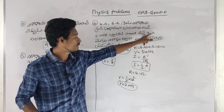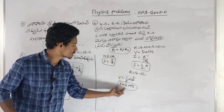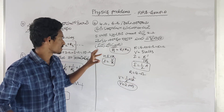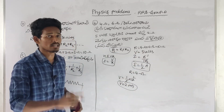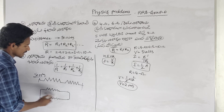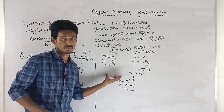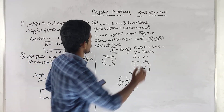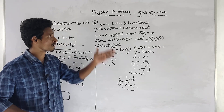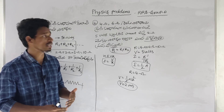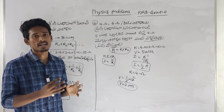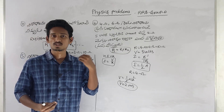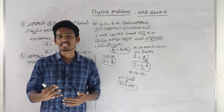This 4 ohms gives a voltage of 2 volts. We have done series combination and parallel combination. V is equal to IR formula. We are doing Group D exam physics problems. Subscribe to our YouTube channel.